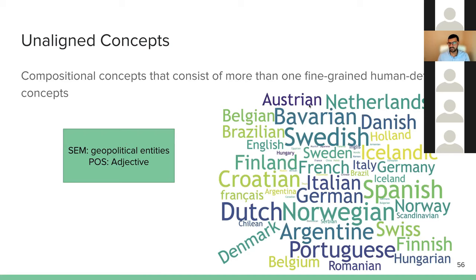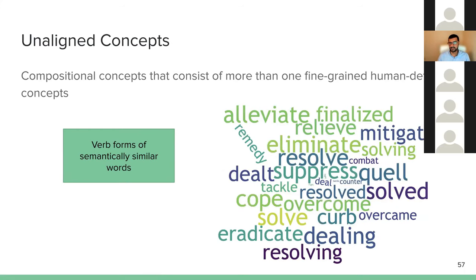For example, this cluster was not aligned with any human-defined concept, but to a human it's quite logical: it has geopolitical entities and their adjectives — Sweden/Swedish, Finland/Finnish, Brazil/Brazilian. They cannot be explained with one human-defined concept but can be explained with a composition of multiple concepts. Here's another example of an unexplained concept: it's a concept of a word with very specific semantics, but all word forms are mixed together into one cluster.